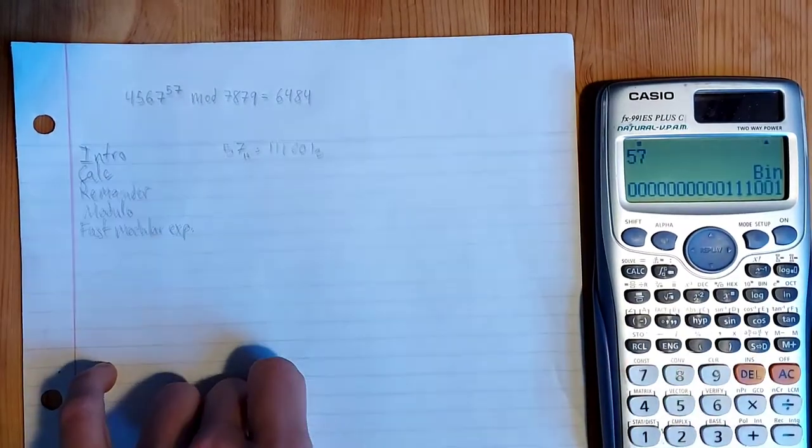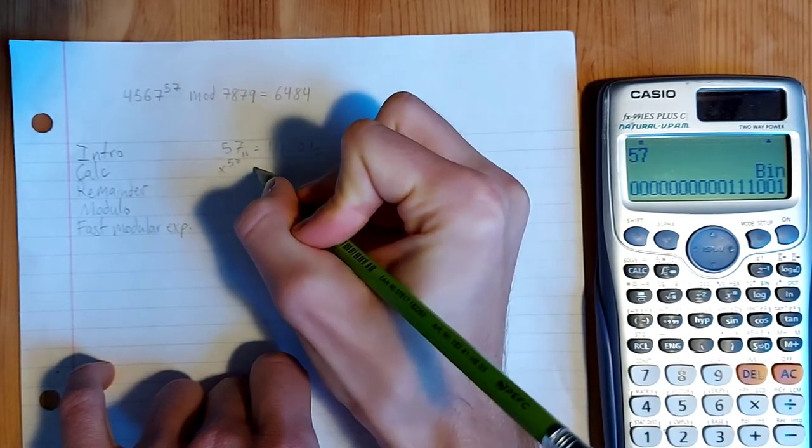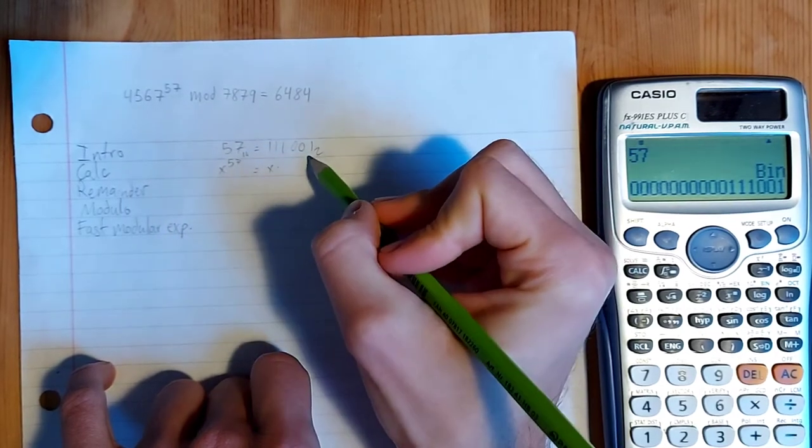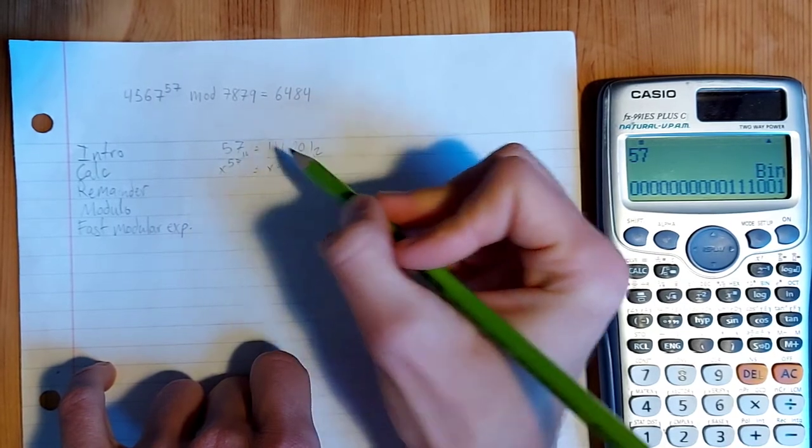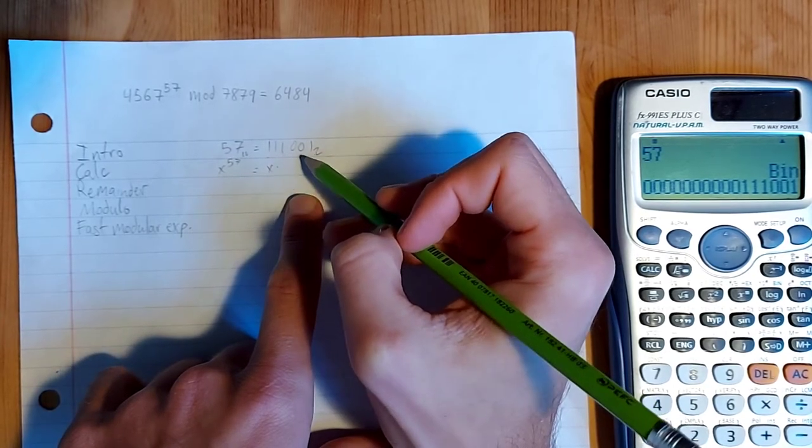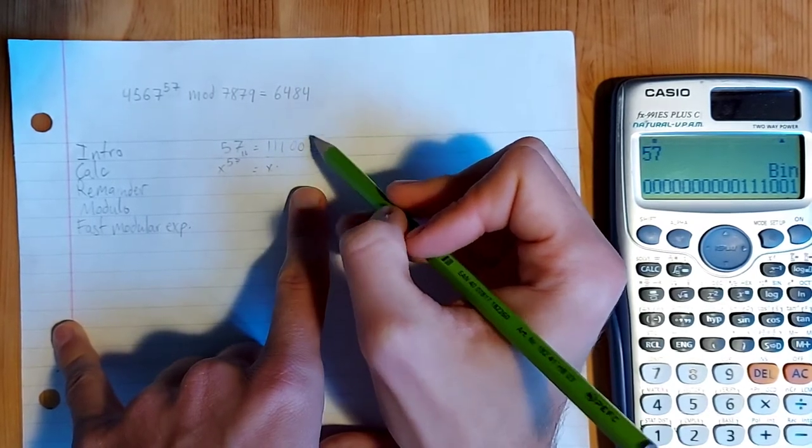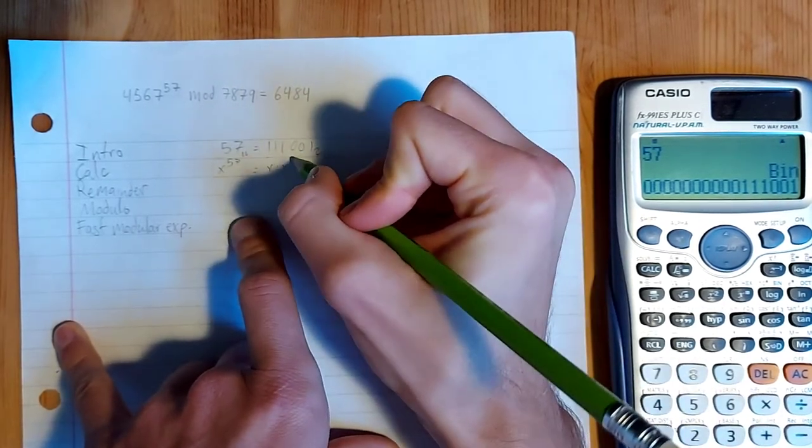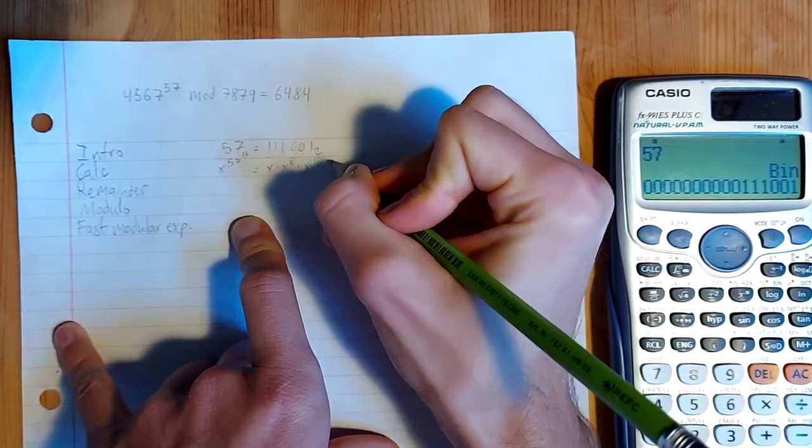What this is essentially telling us in math is that x to the 57 is going to be equal to x times, reading this from sort of right to left here. So this is x, this is x squared, x to the 4, x to the 8, 16 and 32. And so if there's a 1 there, then you want to include that in your product. And if there's a 0, then you don't want to include that. So yeah, x times this x here and then x squared, x to the 4 we skip. So x to the 8, x to the 16 and x to the 32.